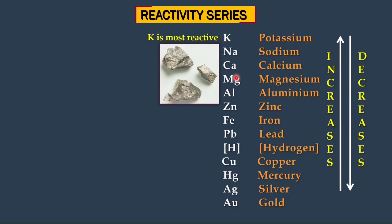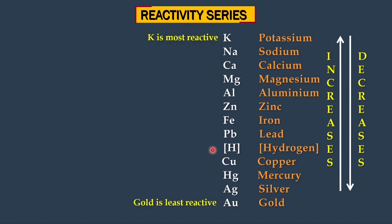The least reactive metal in the reactivity series is gold, whose symbol is Au. In MCQs and exam questions you may be asked which is the most reactive metal or which is the least reactive one. I hope that is clear now.